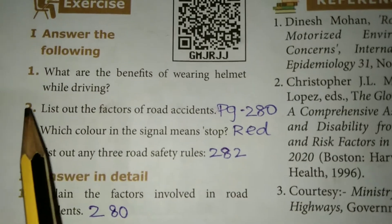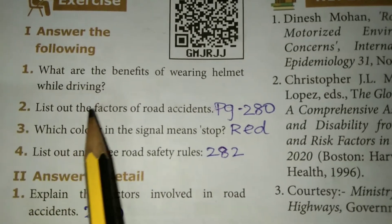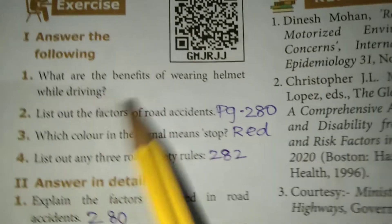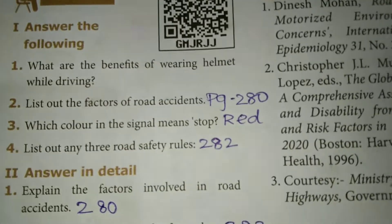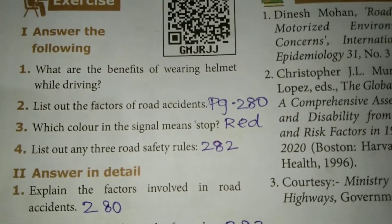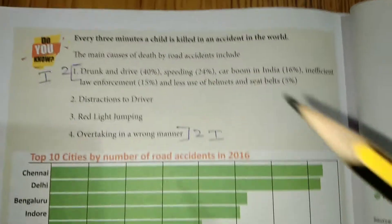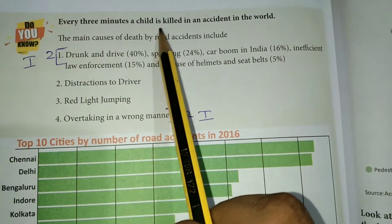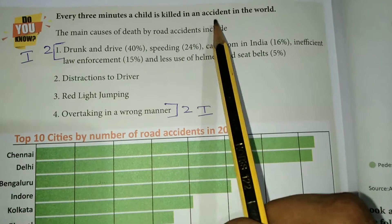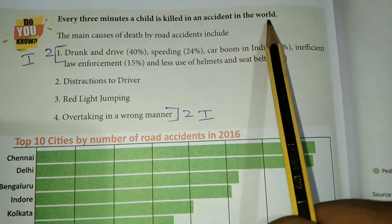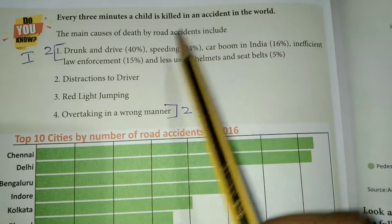Second question: list out the factors of road accident. This is page number 280. Every 3 minutes, a child is killed in an accident in the world.